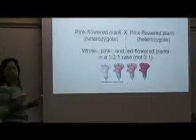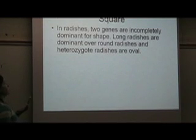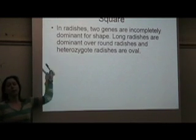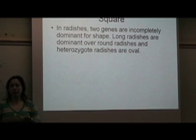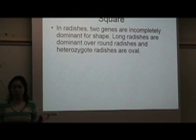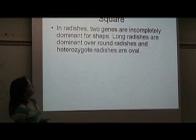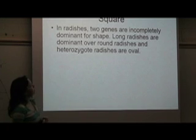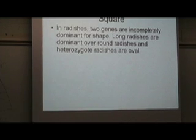So let's do an example Punnett square. In radishes, two genes are incompletely dominant for shape. So notice I've said in the question, incomplete dominance. You use exactly the same letters, you just have to remember that the heterozygous is going to be a different color. Long radishes are dominant over round radishes, and heterozygous radishes are oval. So let's write down what we know. That's pretty standard with all of our Punnett squares, write down what we know.